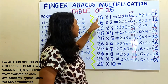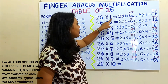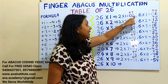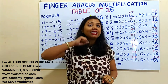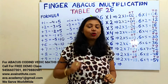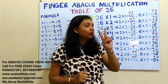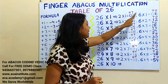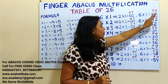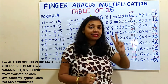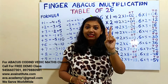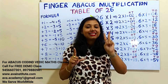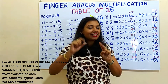26 ones are: 2 ones are 2 — in hundreds 0, in tens 0, in ones 2. Then 6 ones are 6 — in tens 0, in ones 6. So the answer is 26.